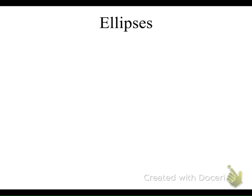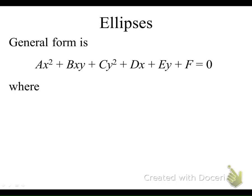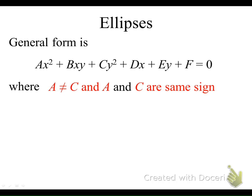Today we're going to continue with our second conic section, the ellipse. Remember, the general form of our equation is set equal to 0, and the b coefficient is 0, so that term is essentially wiped out of our equation. We recognize that we're dealing with an ellipse because the coefficients a and c are not equal, but they will have the same sign.